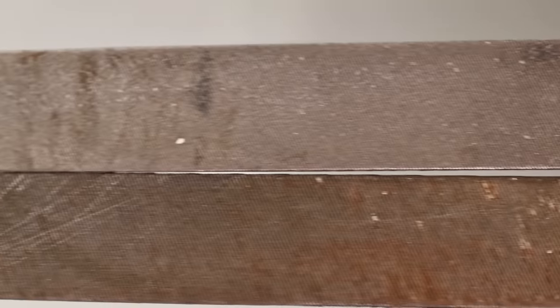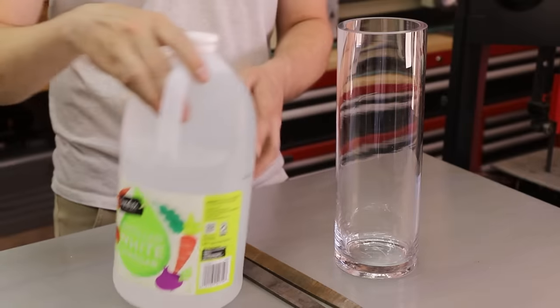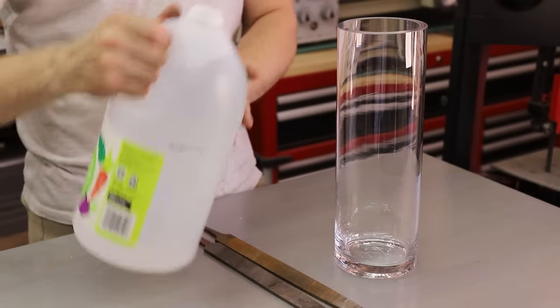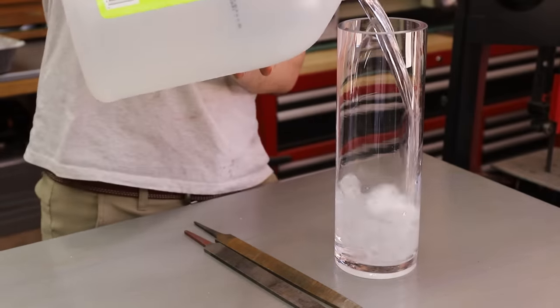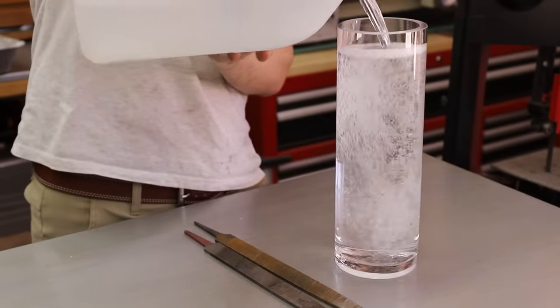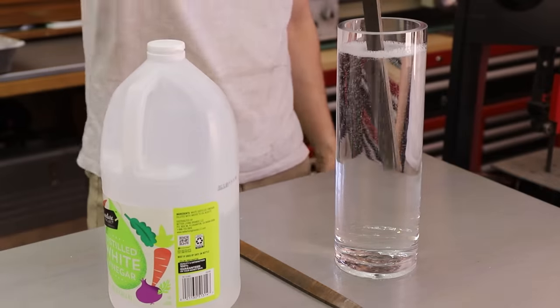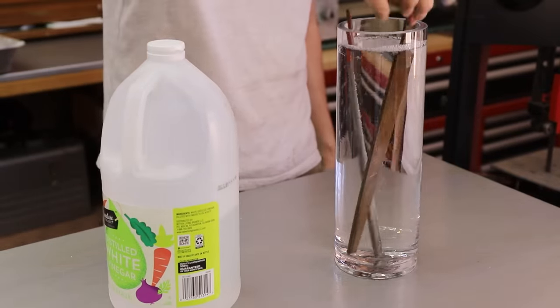Next I wanted to try plain old white vinegar. This contains acetic acid, which is also supposed to dissolve steel. I went through the same cleaning process as before and then placed them in the vinegar for 8 hours.